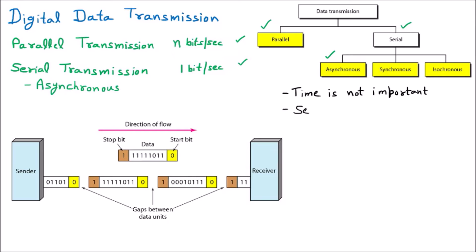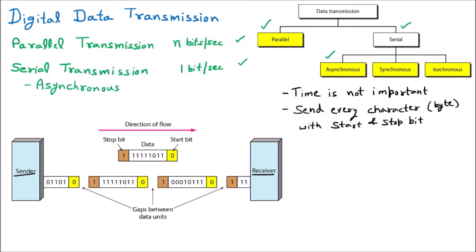The second important thing about asynchronous communication is that it sends every character — and we know every character is one byte — with a start bit and a stop bit. Looking at the diagram: a sender is sending data to a receiver. For 8 bits of data (one byte, i.e., one character), a zero is added at the beginning, which is called the start bit, and a one is added at the end, called the stop bit.